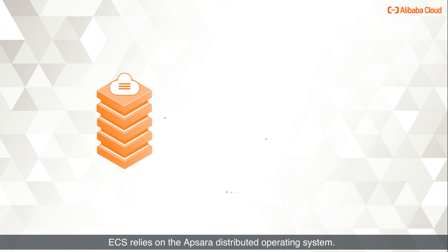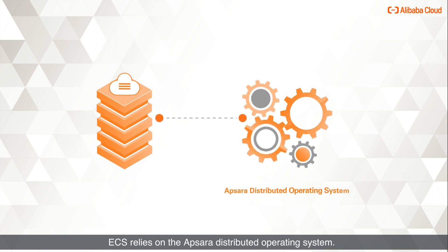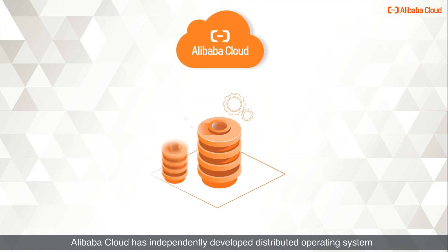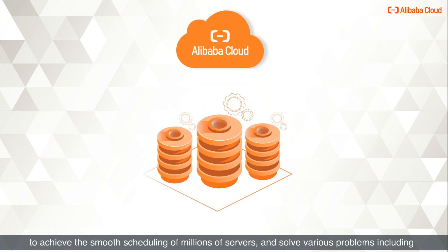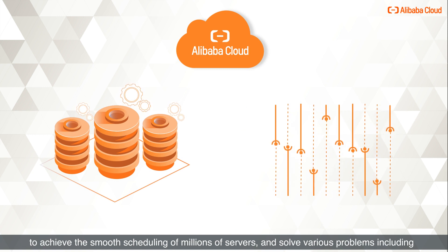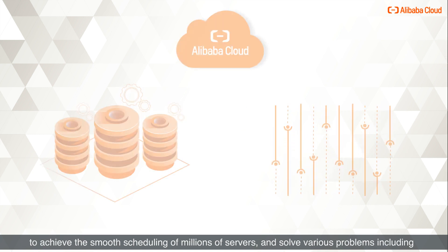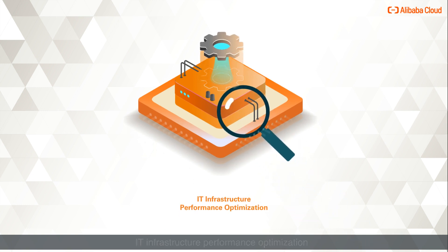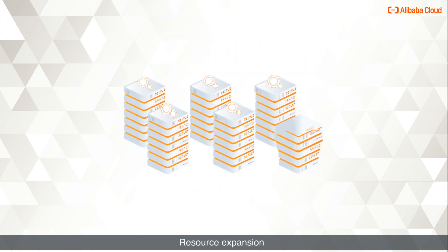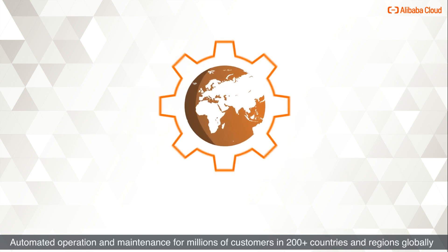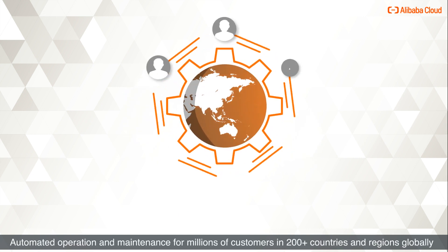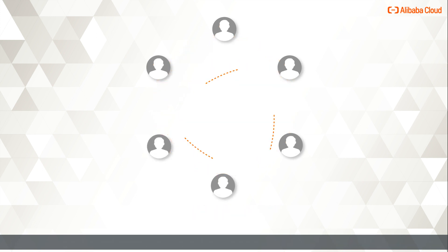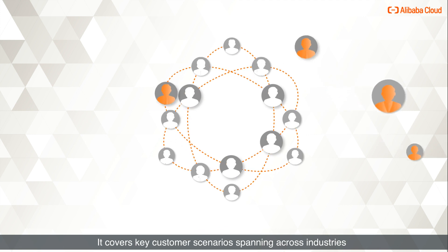ECS relies on the AppSera Distributed Operating System. Alibaba Cloud has independently developed a distributed operating system to achieve the smooth scheduling of millions of servers and solve various problems including IT infrastructure performance optimization, resource expansion, and automated operation and maintenance.